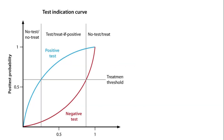This is the test indication curve, a tool used to guide clinical decision-making based on a patient's pretest probability of disease. On the left side of the curve, where the pretest probability is low, we are in the no-test, no-treat zone. Here, the disease is so unlikely that neither testing nor treatment is justified. In the middle range, we enter the test and treat if positive zone, which is the most useful range for diagnostic testing. A positive result significantly increases the post-test probability, possibly crossing the treatment threshold.